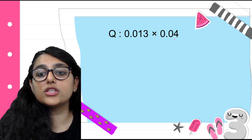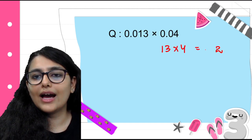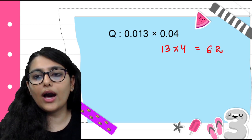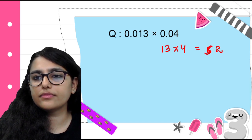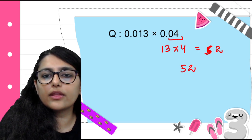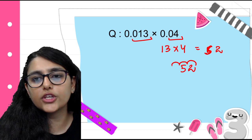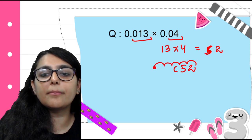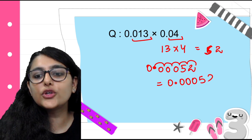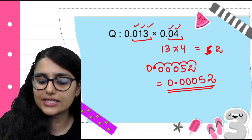Next: 0.013 × 0.04. Ignore decimals — 13 × 4: 4 × 3 = 12, 4 × 1 = 4 plus 1 = 5, so 52. Now count decimal places: 3 from the first + 2 from the second = 5 places. Count 5 places from the right in 52: 1, 2, 3, 4, 5 — fill empty spaces with zeros. So my answer is 0.00052. Be careful while counting the digits — 5 places should be skipped.